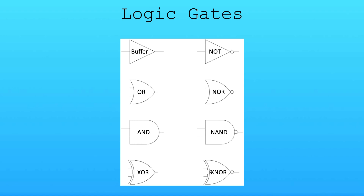First we have a buffer gate — whatever you input, it'll give as an output. We don't really use this in Minecraft at all because it's rather useless. You could consider a repeater as a buffer gate since you put in an input and it gives an output with a one-tick delay. However, you do need a buffer gate sometimes in real life because of factors like current.